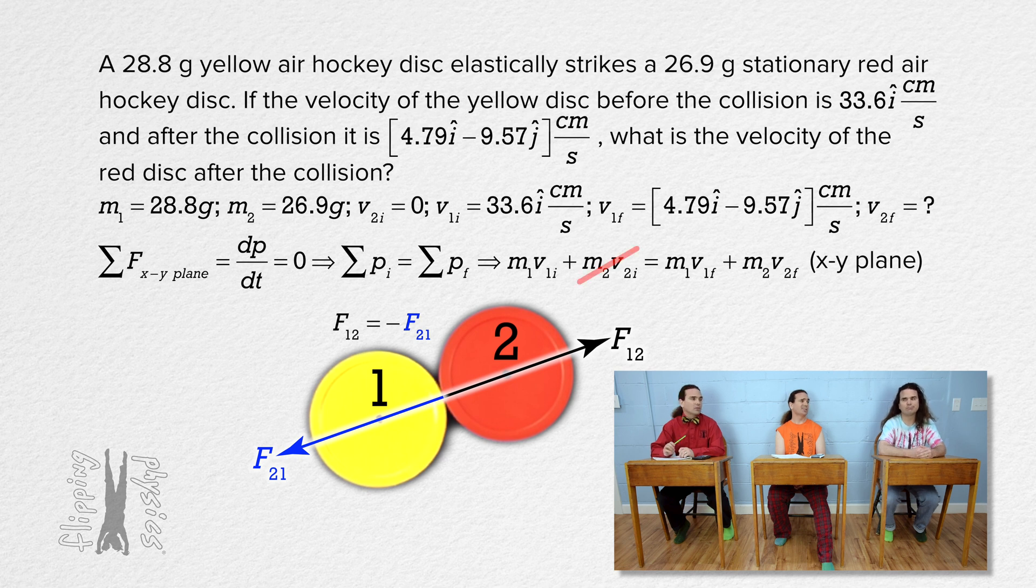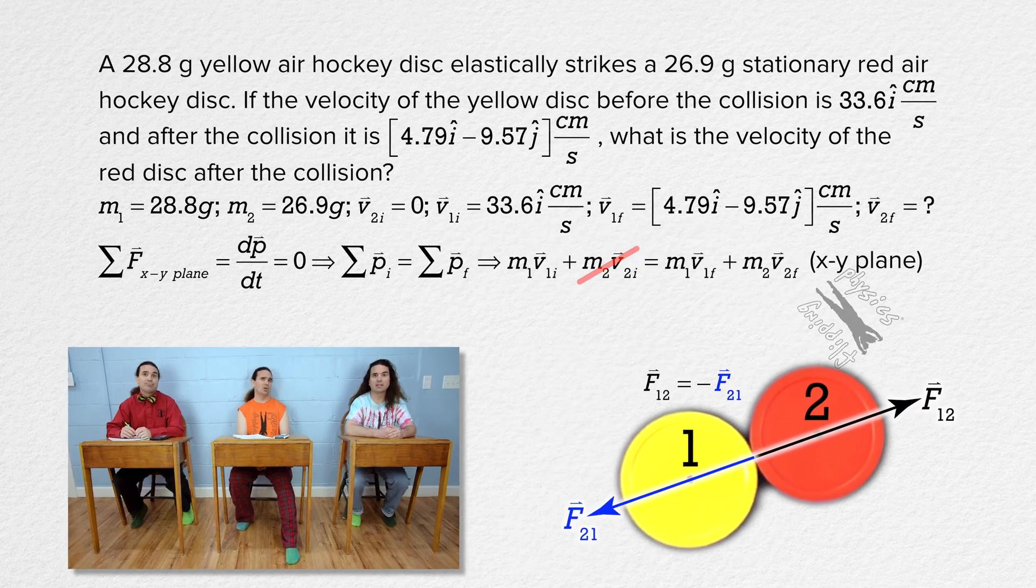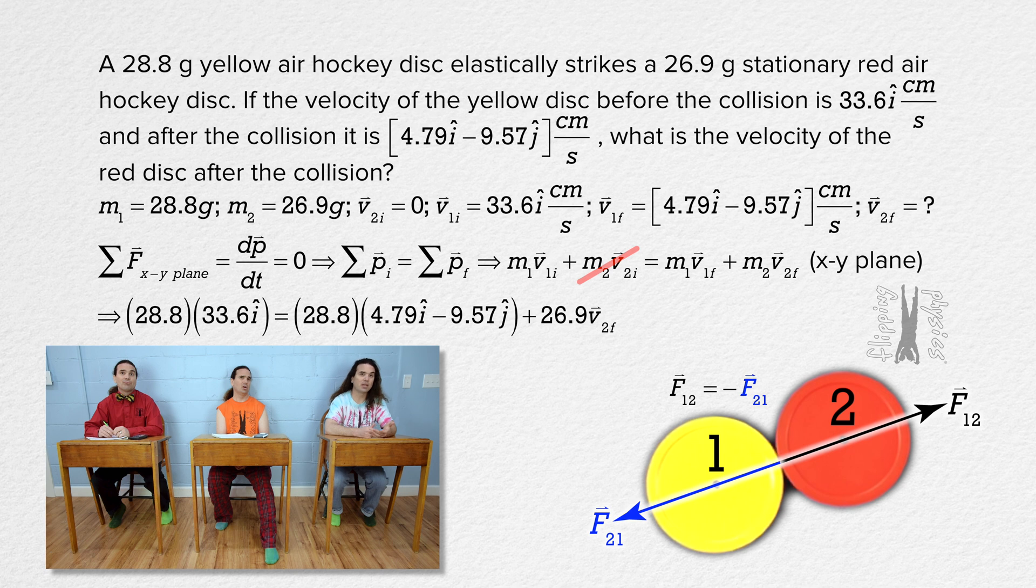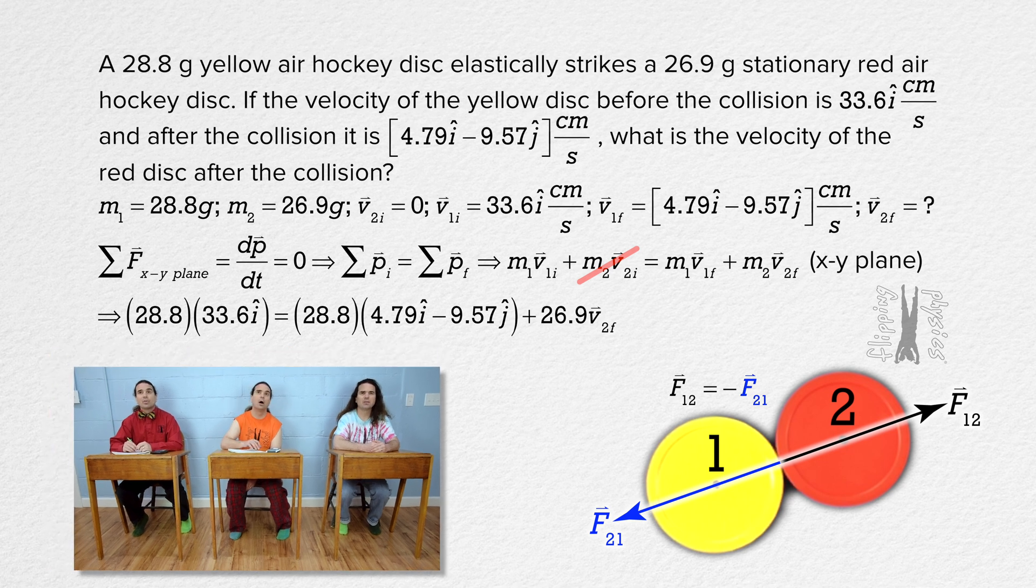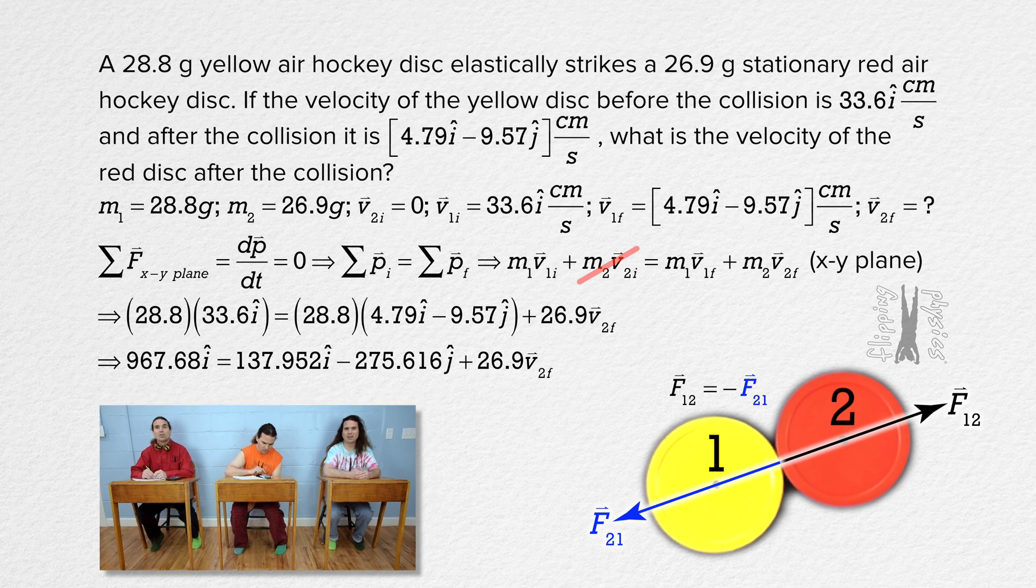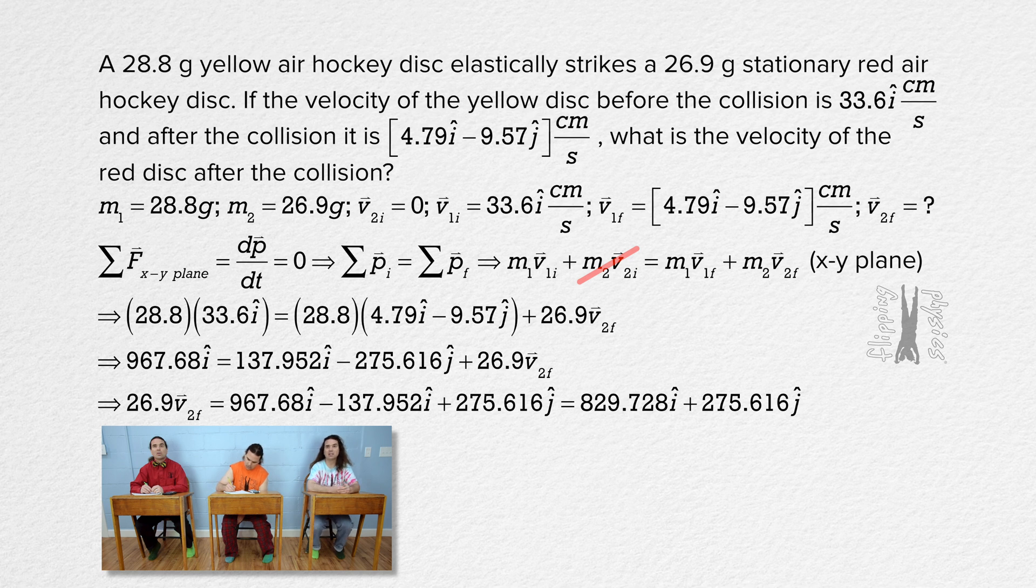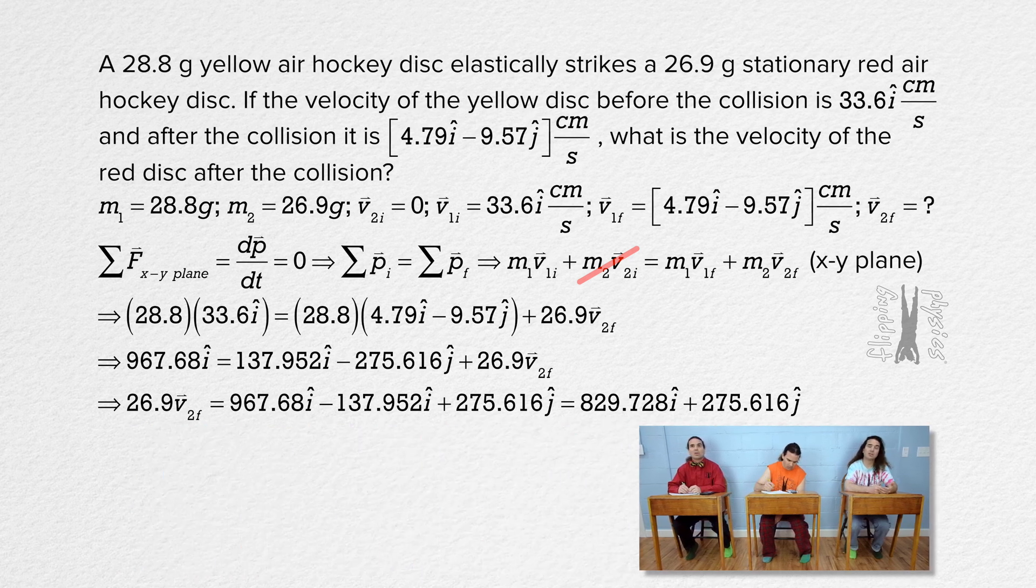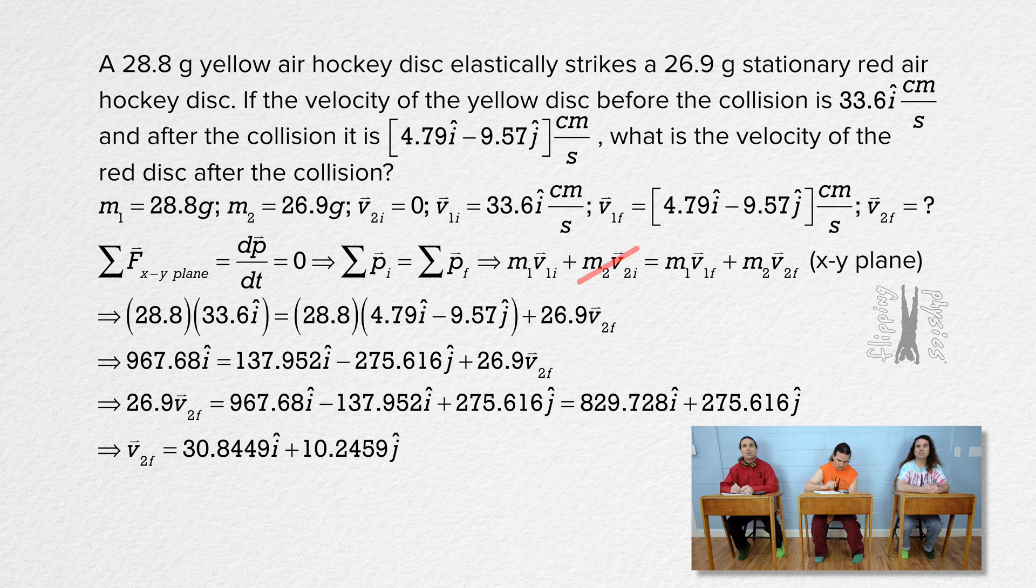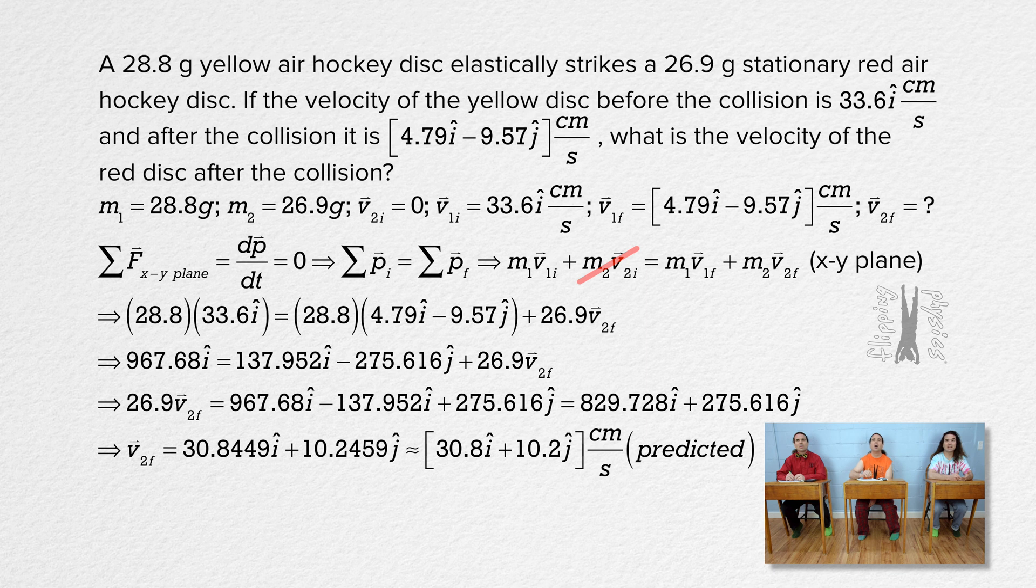That was a really long sentence. Remember, force, momentum, and velocity are all vectors. Right. We can substitute in numbers and we get 28.8 times 33.6i equals 28.8 times the quantity 4.79i minus 9.57j plus 26.9 times v₂f. And let's see, we multiply numbers together, rearrange the equation to get v₂f on the left side, combine unit vector i terms, divide the whole equation by 26.9, and we get v₂f equals 30.8449i plus 10.2459j or 30.8i plus 10.2j centimeters per second with three sig figs.